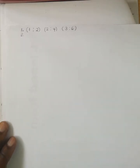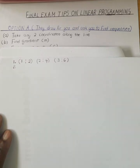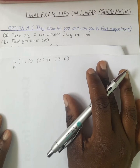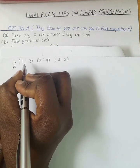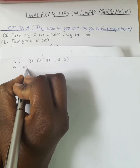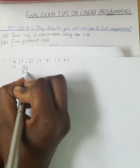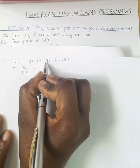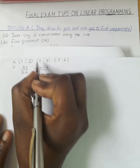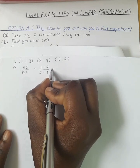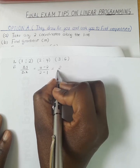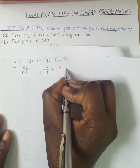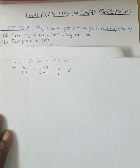Now that I have the coordinates, the next step is to find the gradient. We are going to use the coordinates above. Gradient is change in Y over change in X. So let's say I use 1, 2 and 2, 4. The change in Y is 4 minus 2 over 2 minus 1. That gives us 2 over 1, so our gradient is 2.